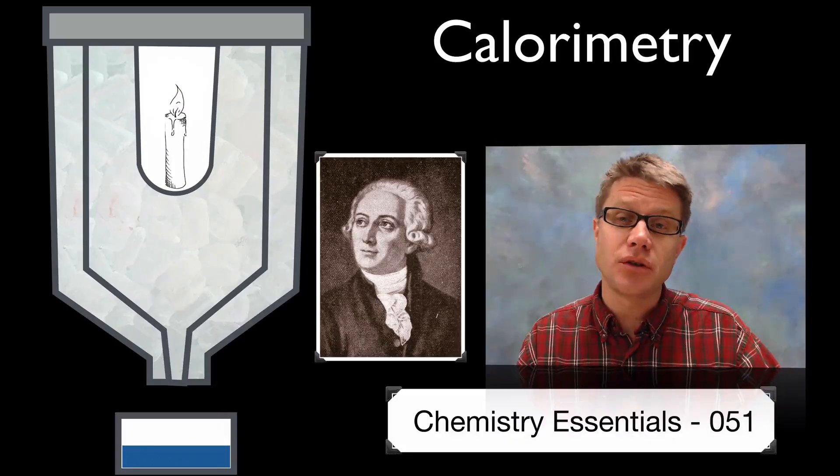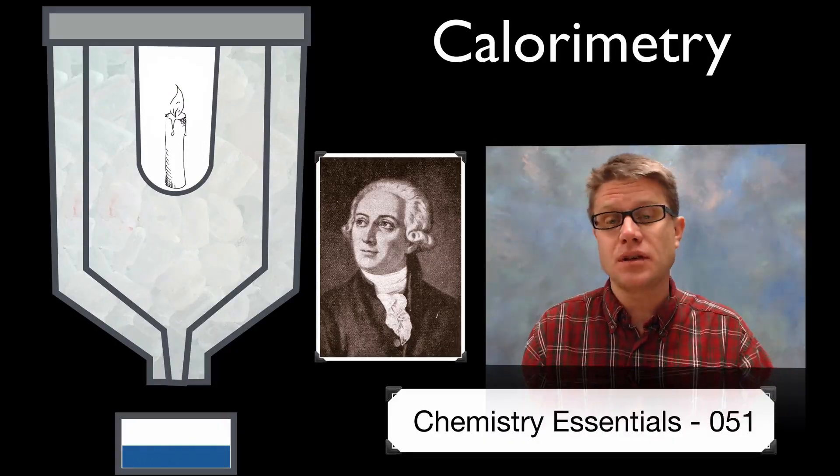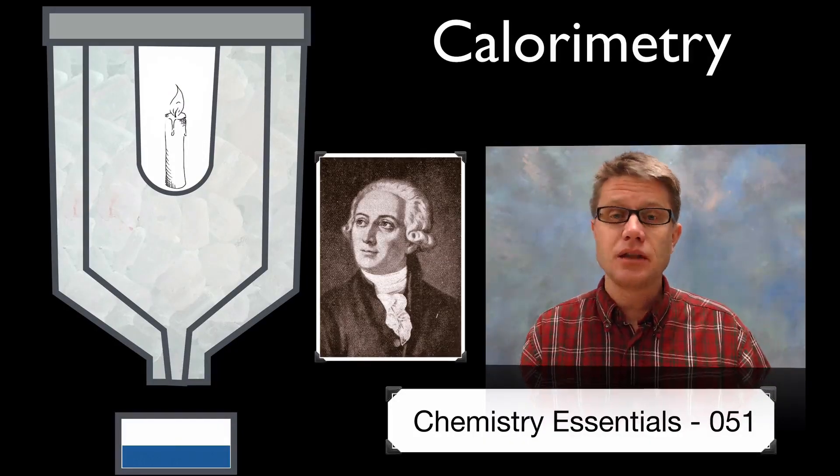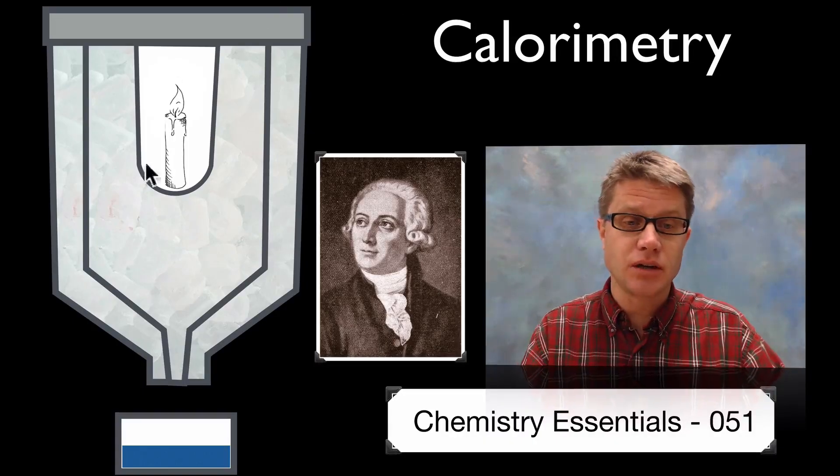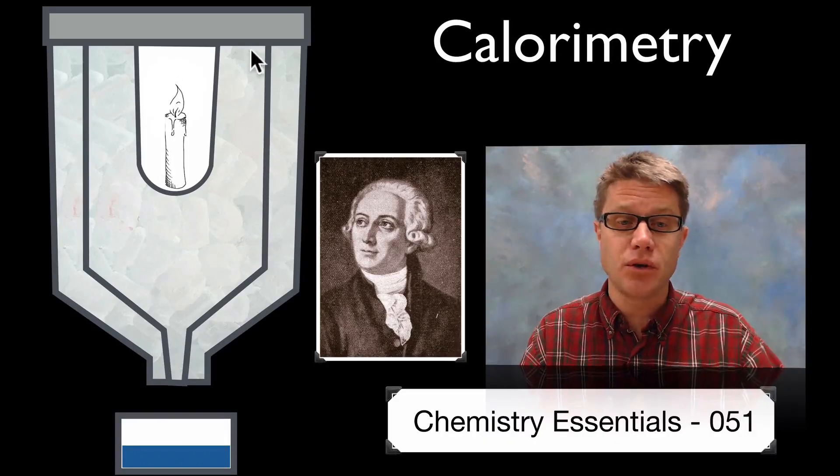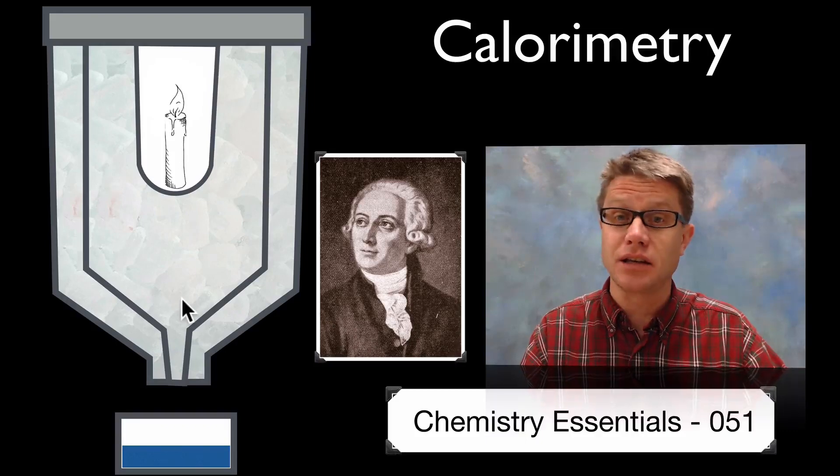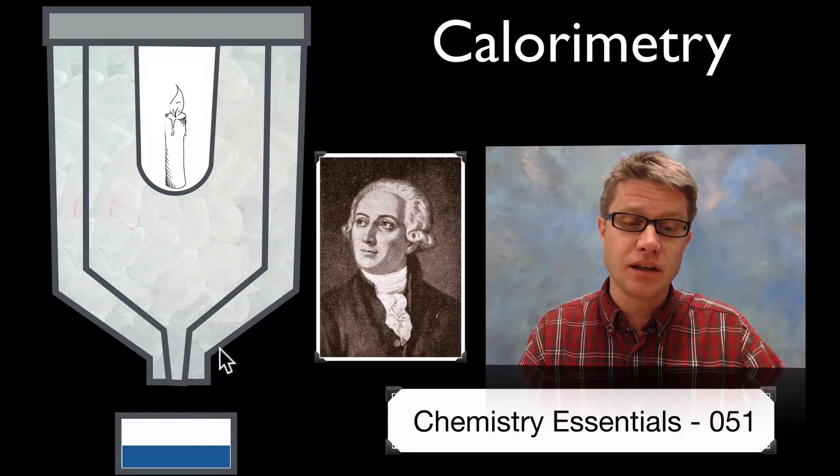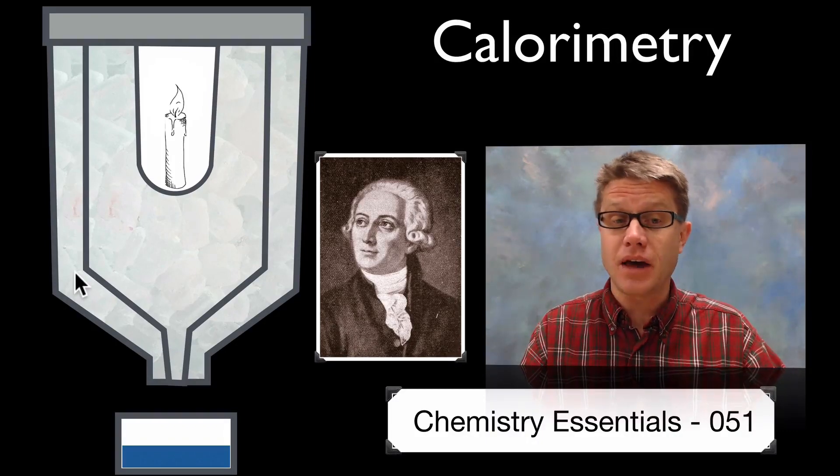And so calorimetry, if we just break down that word, it means the measuring of heat. And the first calorimeter that was created by Lavoisier was an ice calorimeter. Basically what you had was a chamber that had ice on the inside and then an insulating chamber of ice around the outside of that.